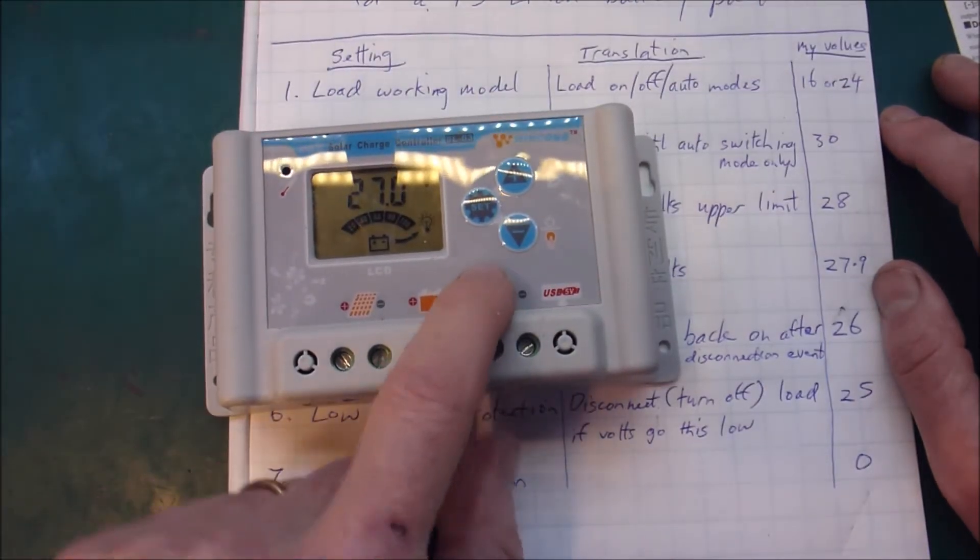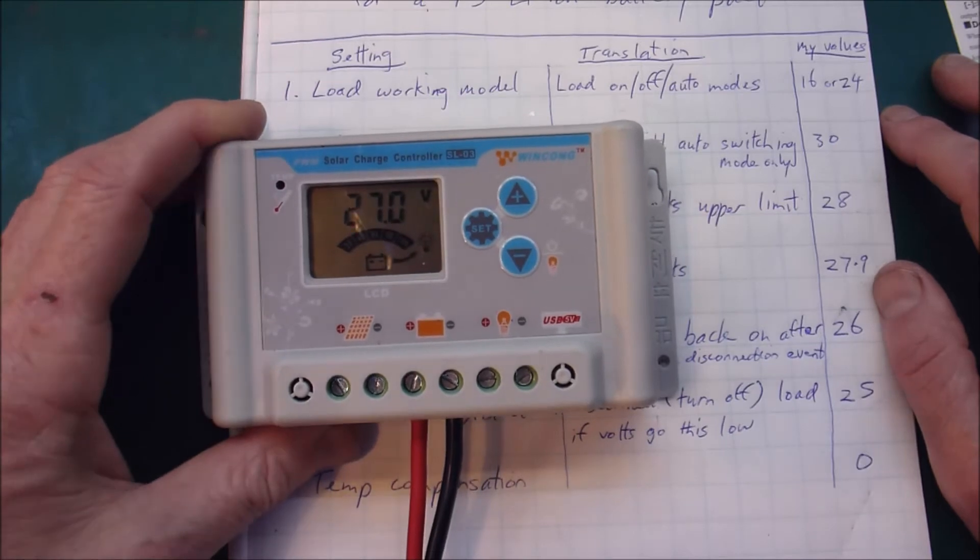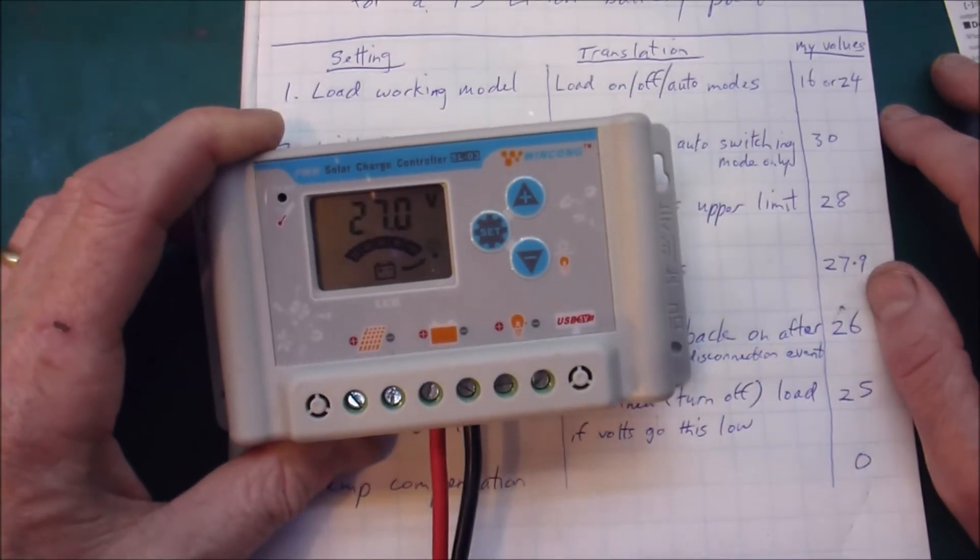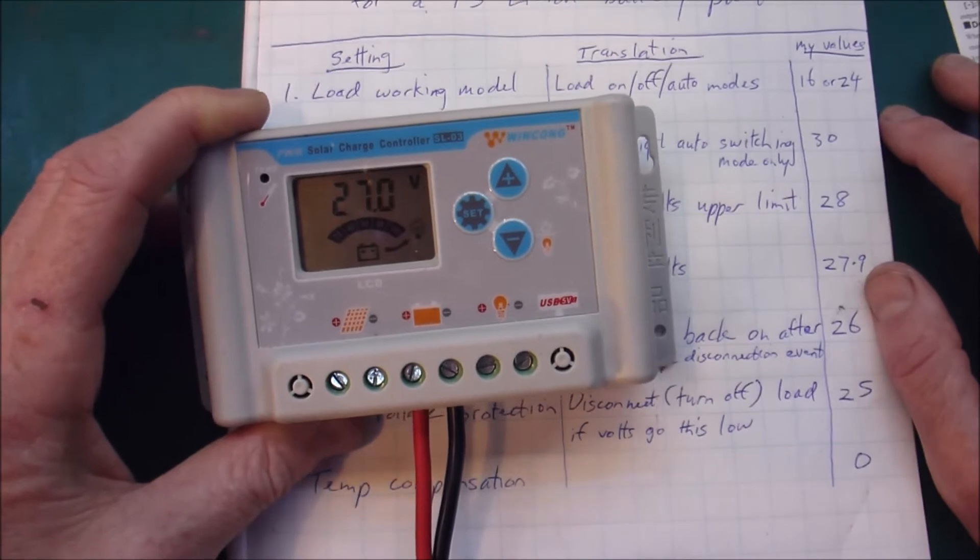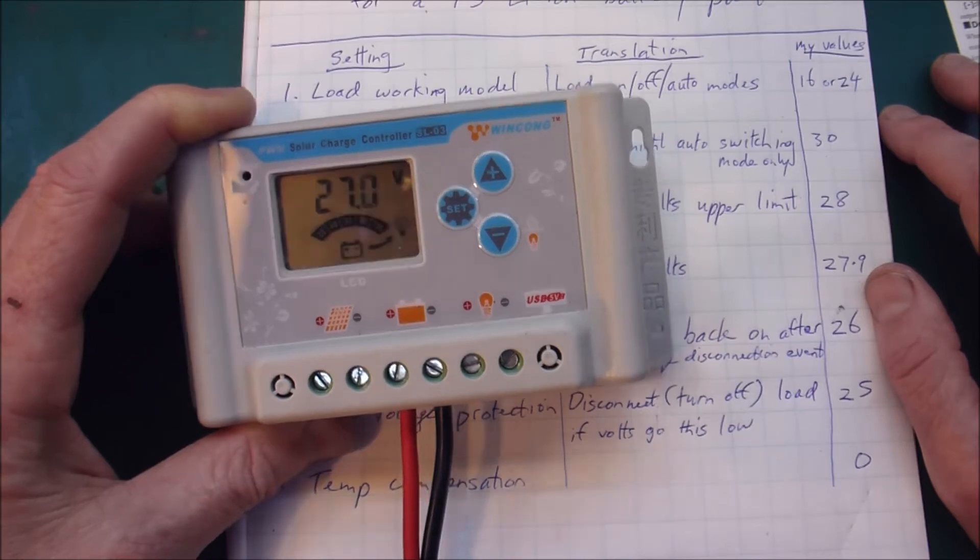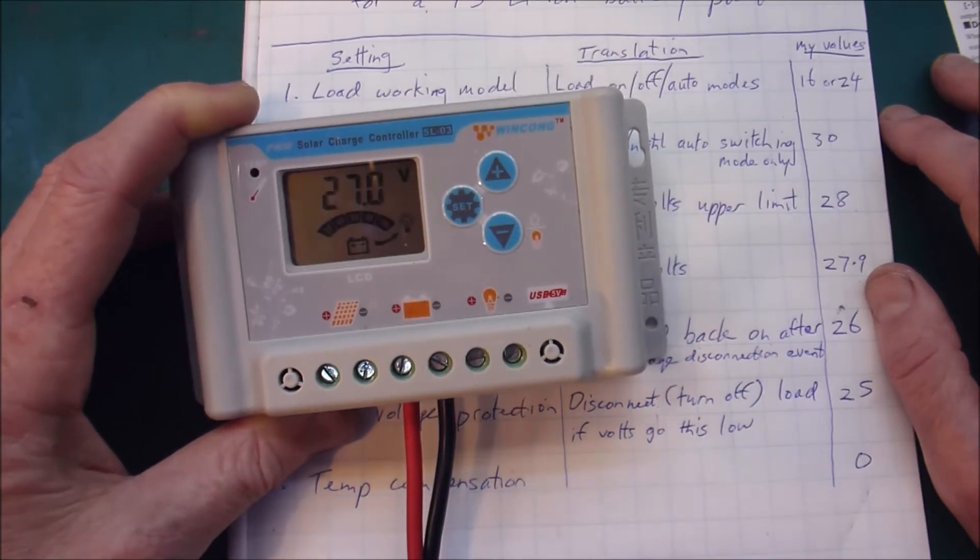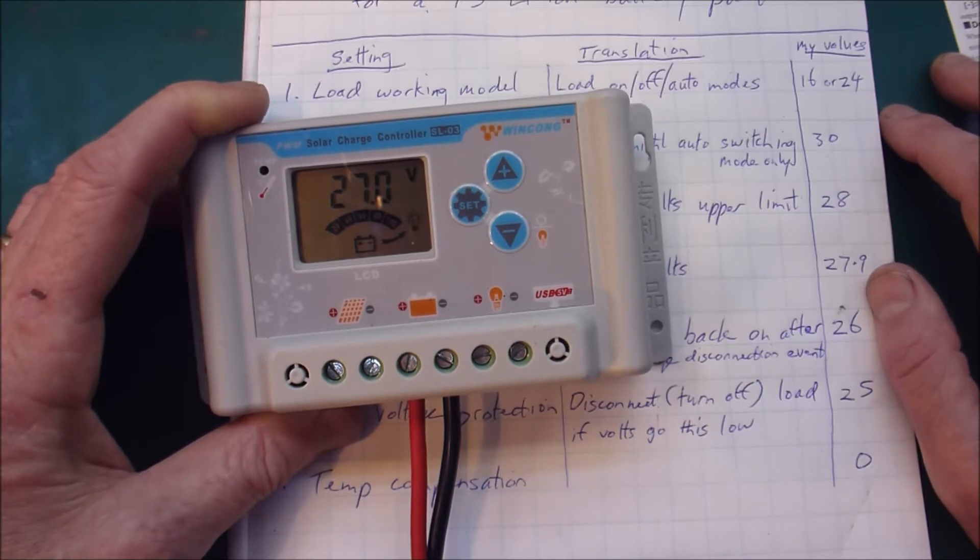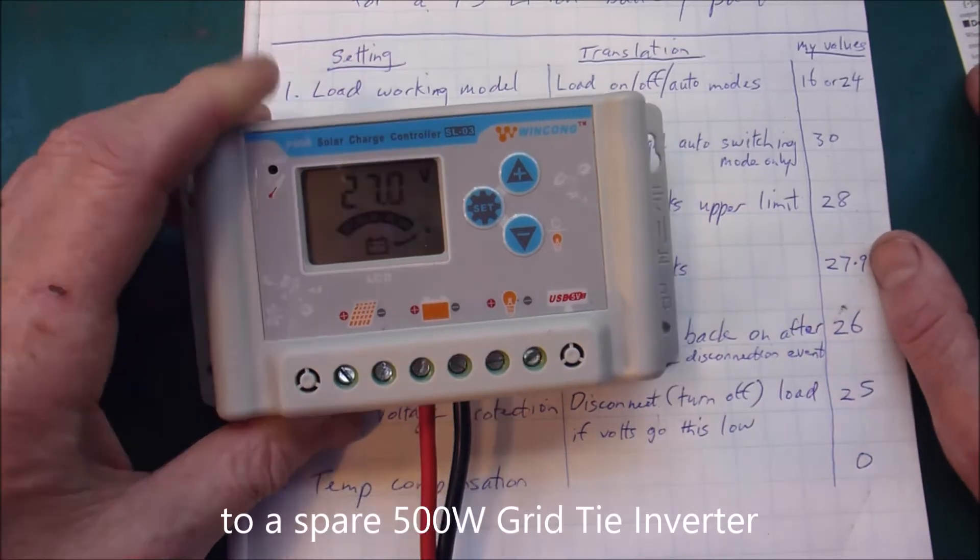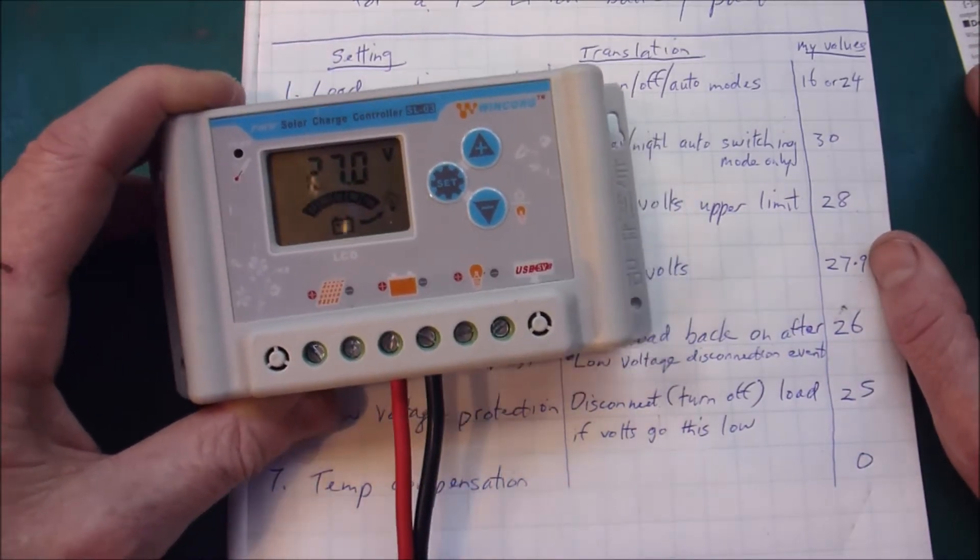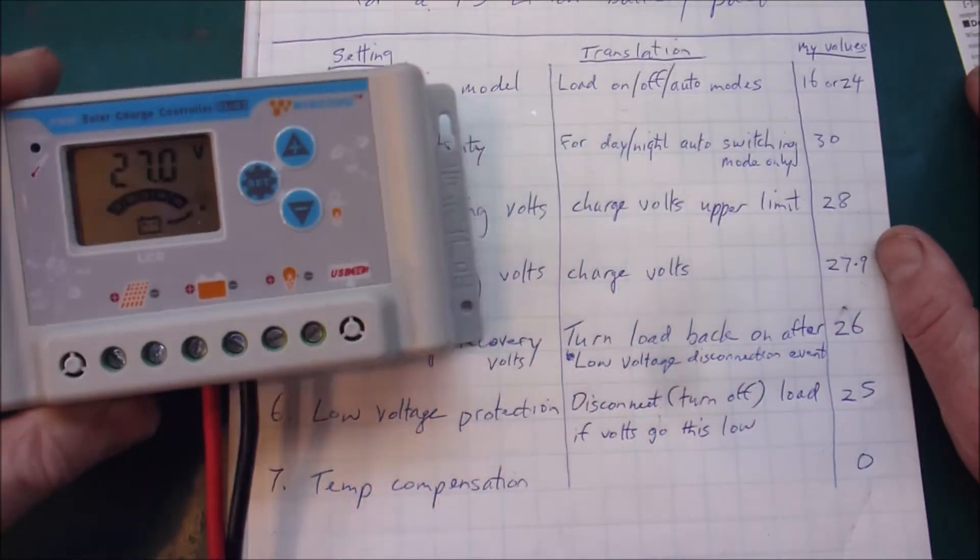This one is rated at 30 amps. My general rule of thumb is only trust these cheap Chinese electronics to be as good as half their rating. So I try not to put more than 15 amps into it from the solar panels. So what I actually do in summer is I shift some of my solar panels to a different system so that this can never get more than about 20 amps going into it. Certainly I don't trust it up to 30 amps.